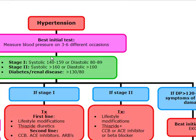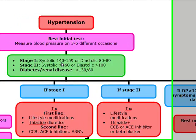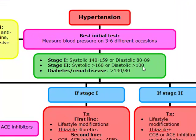We're going to classify hypertension into stage one and stage two. Stage one hypertension is either/or again: a systolic of 140 to 159 or a diastolic of 80 to 89. Stage two hypertension is defined as a systolic greater than or equal to 160 or a diastolic greater than or equal to 100. And for diabetes or renal disease, hypertension is defined as a blood pressure over 130/80.